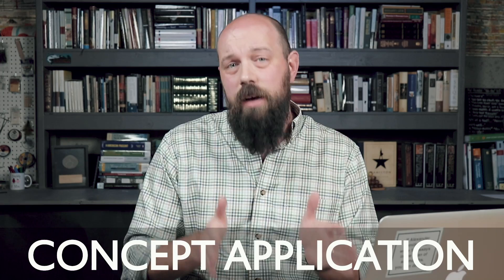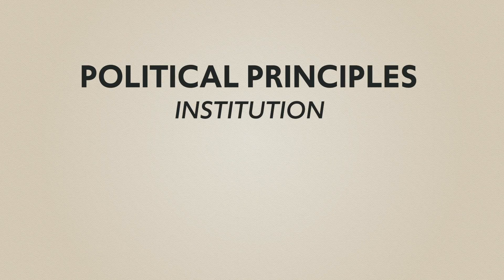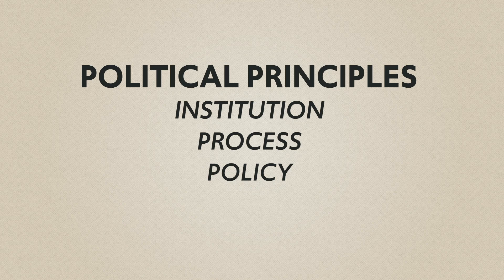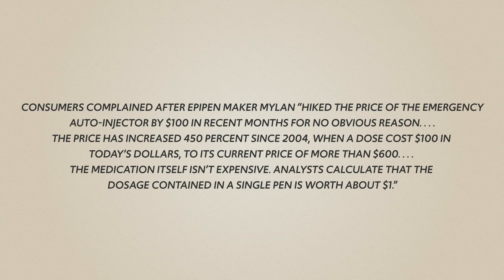The first question you will always see is the concept application question. It will give you a scenario to read and then it's your job to relate that scenario to some political principle you learned in class — a political institution like the presidency, a political process like elections, a political policy like gun control, or political behavior like voting. Here's an example scenario: Consumers complained after EpiPen maker Mylan hiked the price of the emergency auto injector by $100. The price has increased 450% since 2004, when a dose cost $100 in today's dollars, to its current price of more than $600. The medication itself isn't that expensive — analysts calculate the dosage is worth about $1.